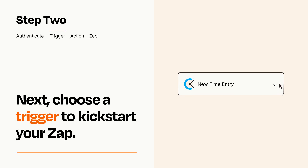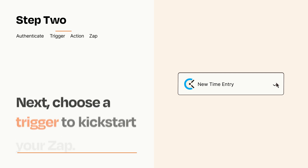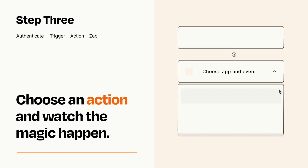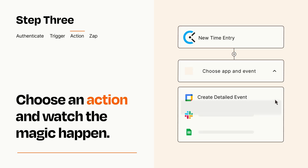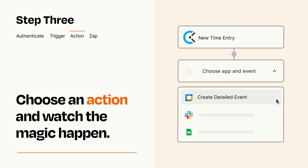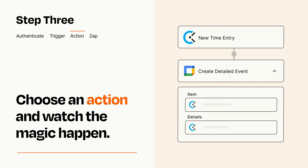This last part is where the magic happens. Choose the action you want to happen in your target app. You'll see a bunch of fields where you can specify the details of your Zap. You can type free form text or pull data in from your trigger step as needed.